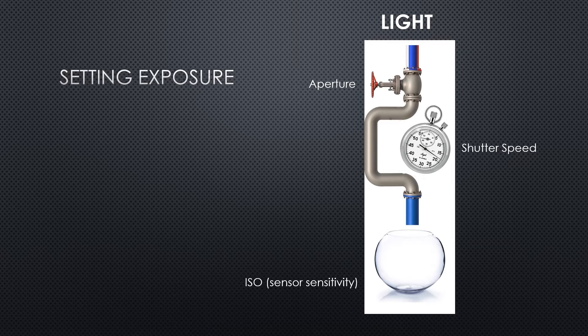The bowl in the diagram is the collector of the water, just like the sensor in your camera is the collector of light. Just how big the bowl is is an indicator of how much water we need to collect. Likewise, your camera, the capacity of the sensor dictates how much light we need in order to create an exposure. Sensors can be adjusted to be more or less sensitive to light, which we've talked about last week. Adjusting the sensitivity is done by simply adjusting the ISO rating in the camera's menus.